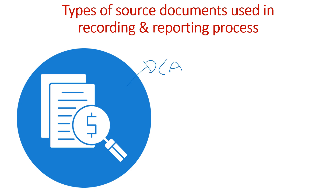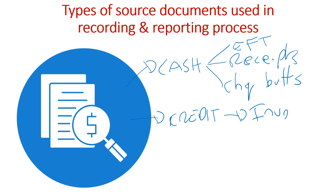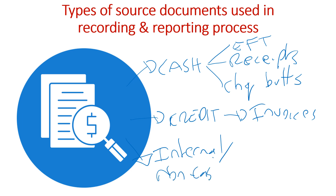We've got our cash transactions and they will be evidenced via EFT — electronic funds transfer — cash receipts for the money coming in, and we'll also have some checks for outgoings, cash payments. We'll also have source documents used in credit transactions: invoices. And then thirdly, we'll have a separate category of internal transactions, or non-cash, non-credit. I'll talk about these a bit later.